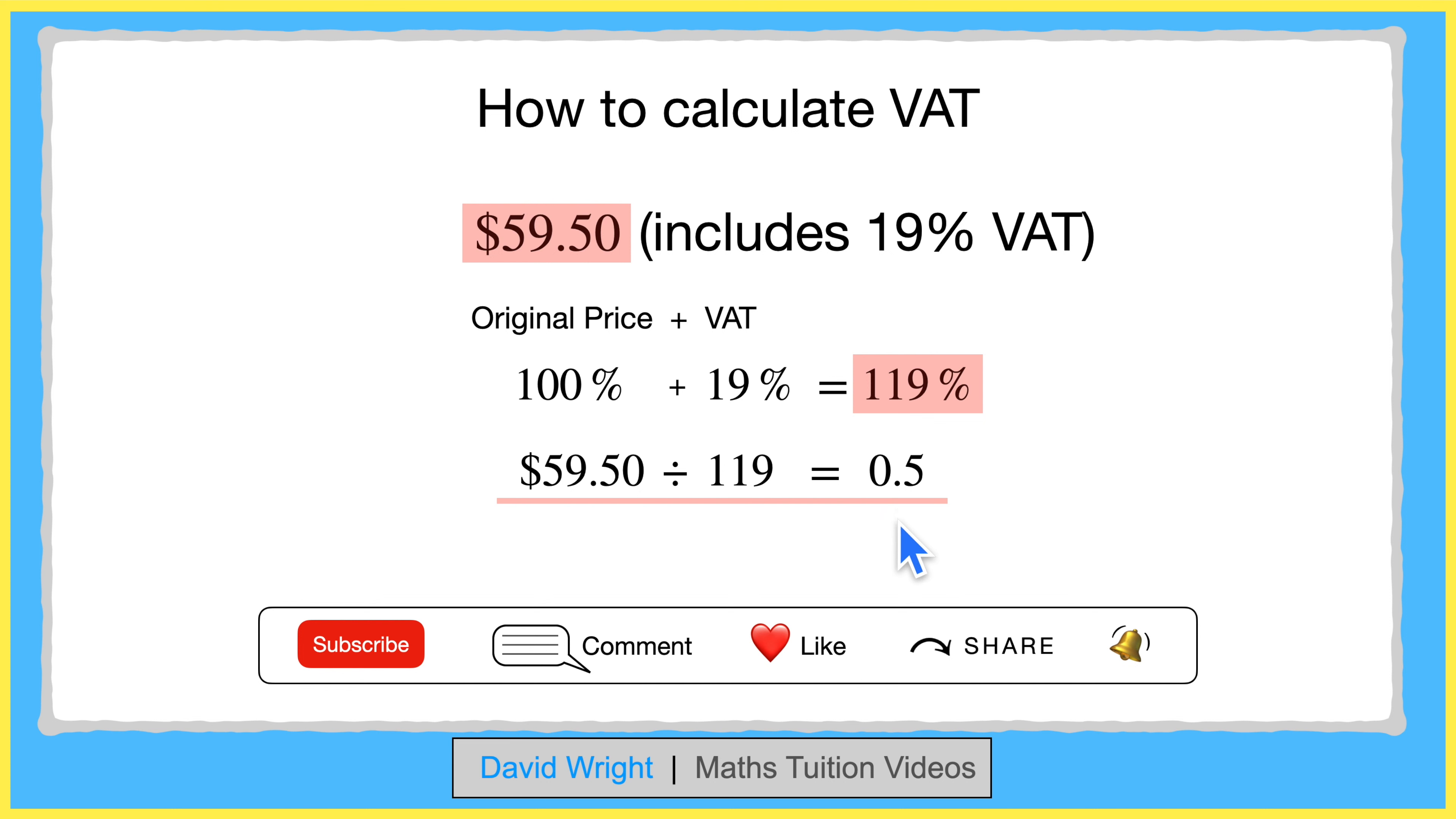Now, it's important to note that we describe the original value, i.e. before VAT was added, as being 100%. So if 0.5 is 1%, we take this and multiply it by 100, which gives a value of 50.